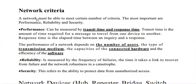The network must be able to meet certain criteria. The most important are performance, reliability, and security. Performance can be measured by transit time and response time. Transit time is the amount of time required for a message to travel from one device to another, and response time is the elapsed time between an inquiry and a response.